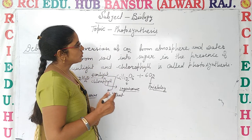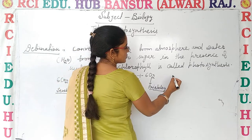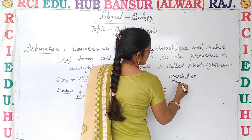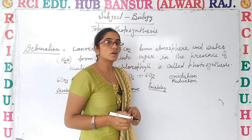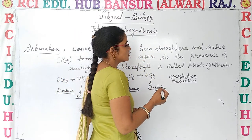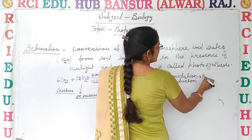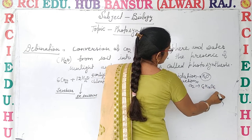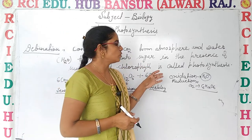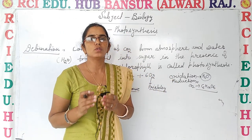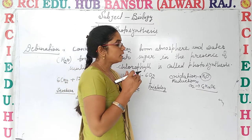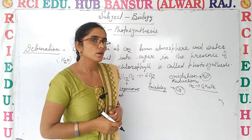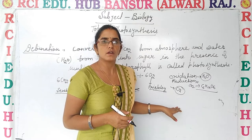Photosynthesis is an oxidation-reduction reaction. Why is it said to be an oxidation-reduction reaction? Because in this process, water gets oxidized and CO2 gets reduced to carbohydrate. It is not only the process which provides food to all living organisms, but it is also a process which produces oxygen that is available in the atmosphere. So it is a main source for atmospheric oxygen too.